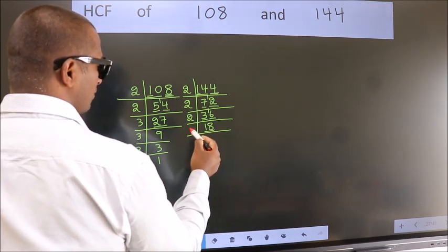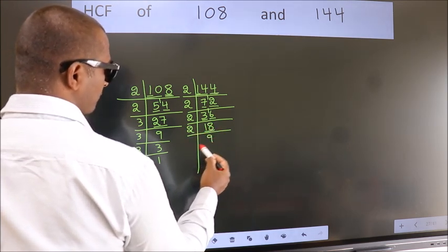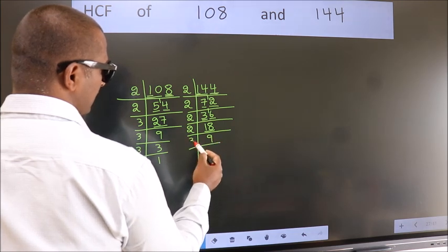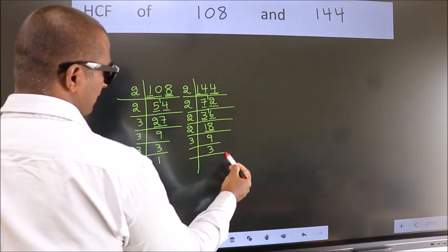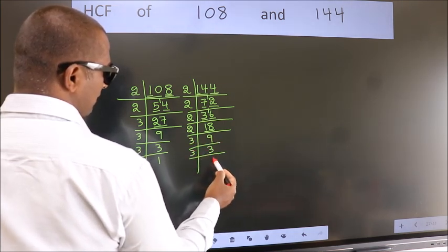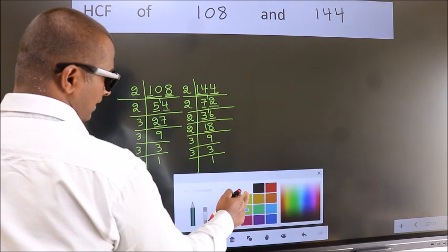Now 18 is 2 times 9 is 18. 9 is 3 times 3 is 9. 3 is a prime number, so 3 times 1 is 3. Therefore, our HCF is,